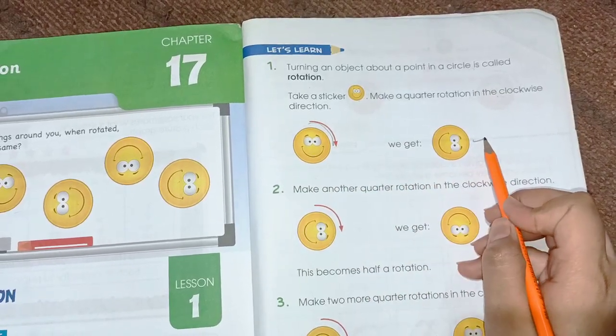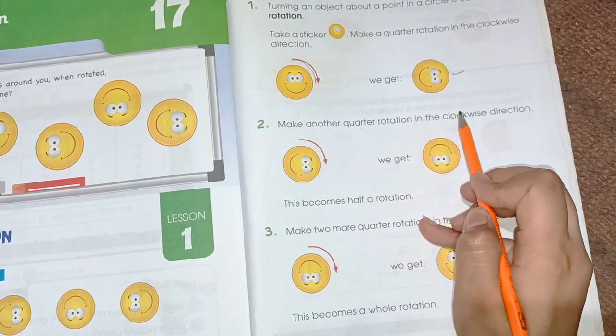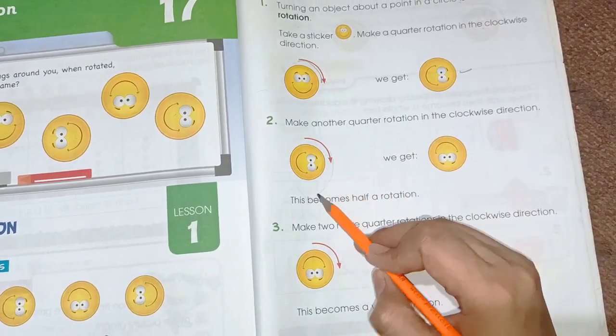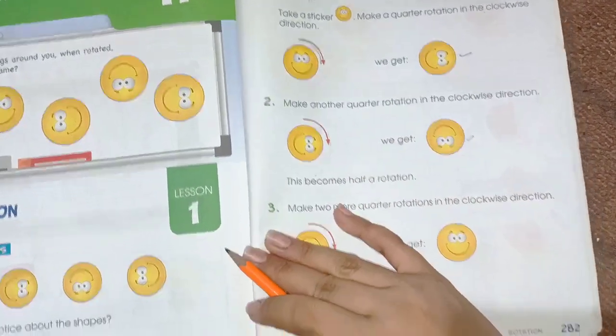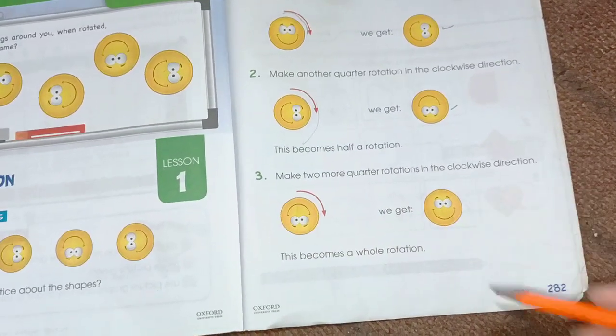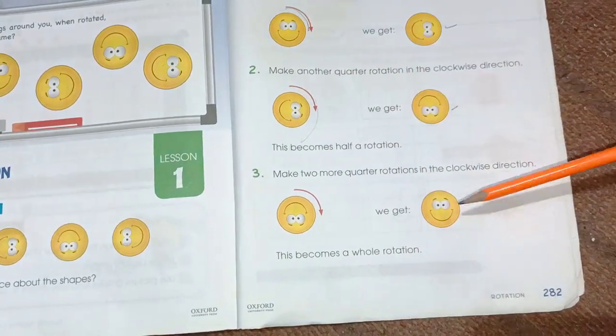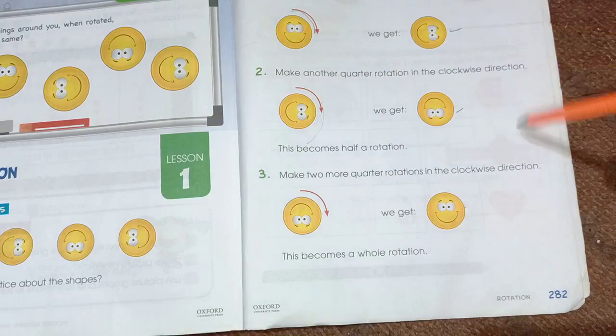When we rotate this emoji into clockwise, we get this. Now from this, again we have to rotate this into clockwise direction. When we rotate this, we get this face. Again we have to rotate and we get this. So this becomes a whole rotation because it starts from this and ends at this. So this becomes a whole rotation.